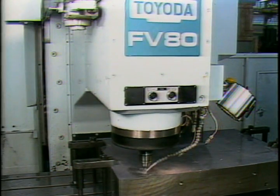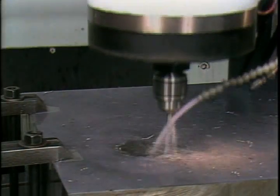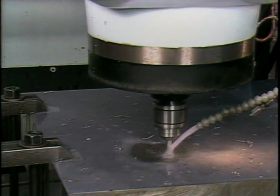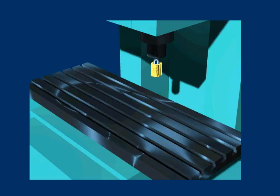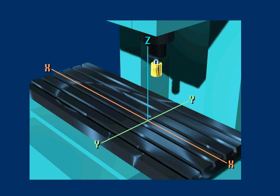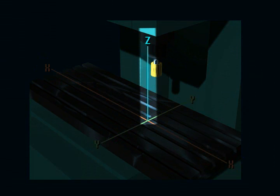Since it allows any point in three-dimensional space to be located and defined, this coordinate system permits controlled movement in any direction to any location. Typically, the primary axes on machining centers are labeled or addressed as x, y, and z.